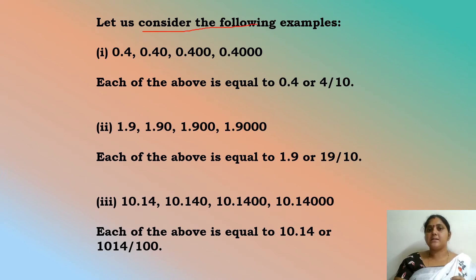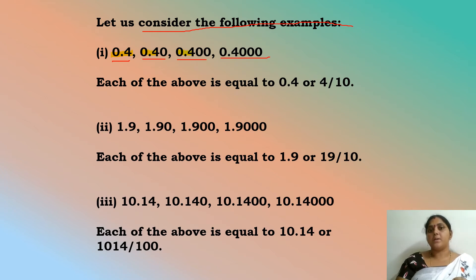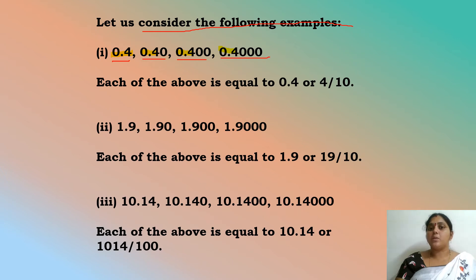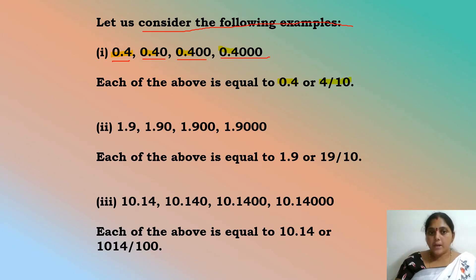Let us consider some examples. If you observe, 0.4 is common in all numbers 0.4, 0.40, 0.400, etc. — only the number of zeros extends to the right. So each of these is equal to 0.4, or 4/10. Similarly, 1.9, 1.90, 1.900, 1.9000 — here 1.9 is common in all numbers, with only the zeros varying. These are all equal to 1.9, or 19/10.